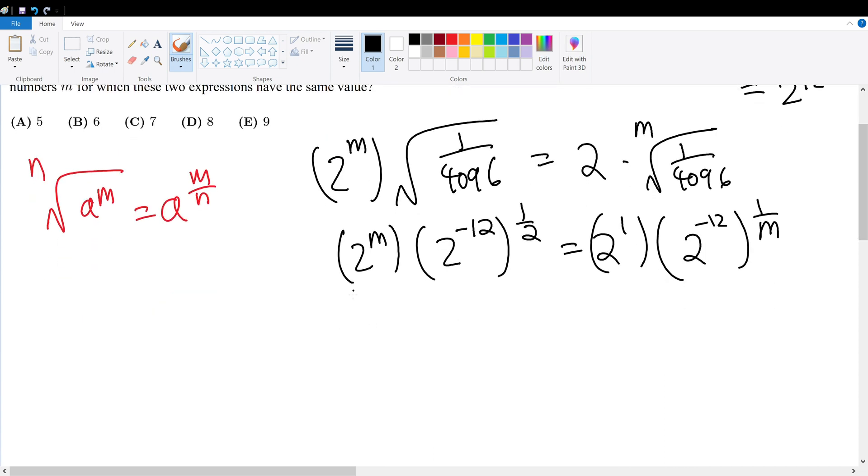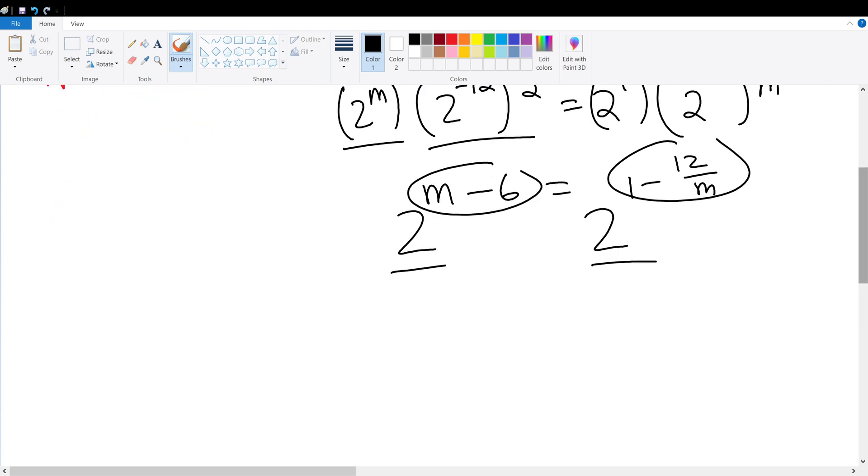So same basis and we add the exponents. m minus 6 must equal to, or 2 to the m minus 6 must give 2 to the 1 minus 12 over m. Now the same base have the same exponents so these exponents must equal and therefore we solve the question.